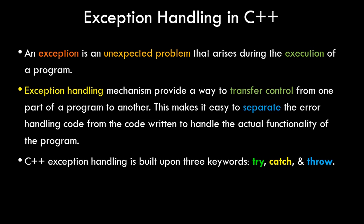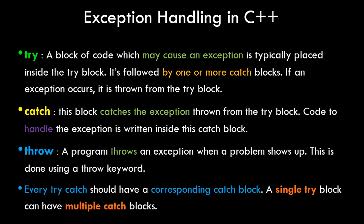In C++, exception handling is built upon three keywords: try, catch, and throw. The first is the try block. It is called a block because it is enclosed in curly braces just like a function, however it is not a function. A block of code which may cause an exception is typically placed inside this try block, and it is followed by one or more catch blocks.